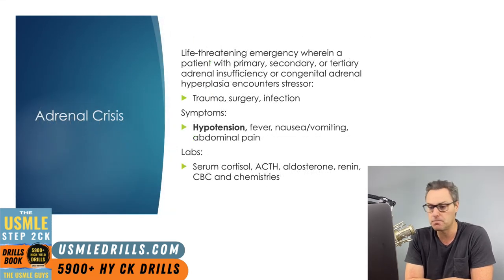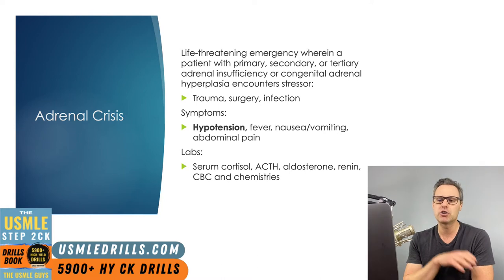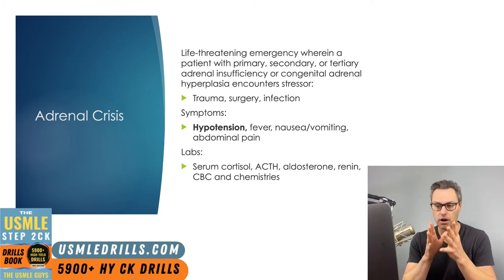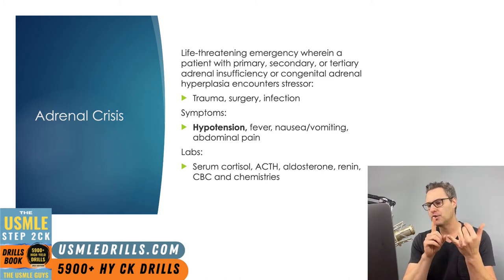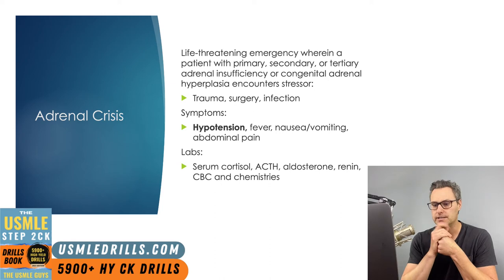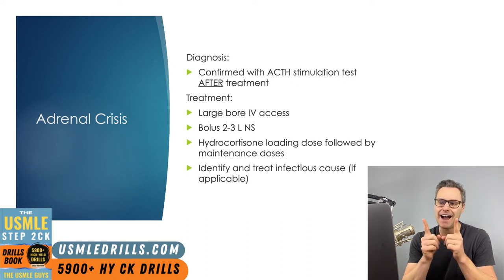If someone with any of these conditions encounters a significant stressor, a life-threatening emergency known as an adrenal crisis can develop. In an adrenal crisis, patients develop hypotension, fever, nausea, vomiting, and abdominal pain. Lab findings depend on the cause — you can expect low cortisol, and ACTH may be elevated, normal, or low depending on the underlying cause. The diagnosis will be confirmed with an ACTH stimulation test after treatment.